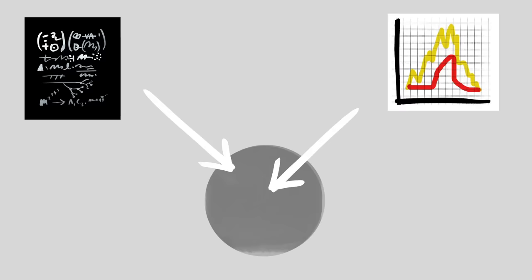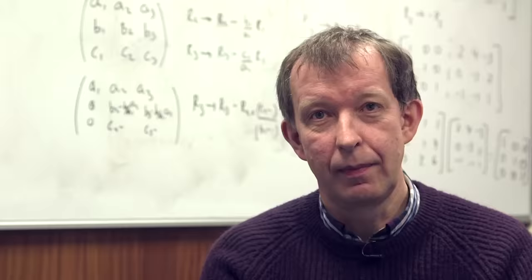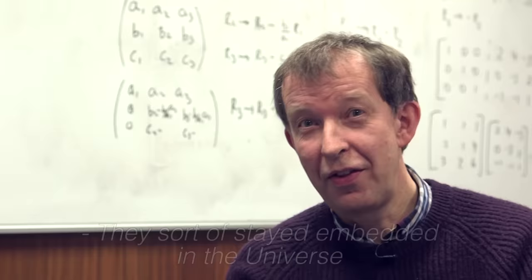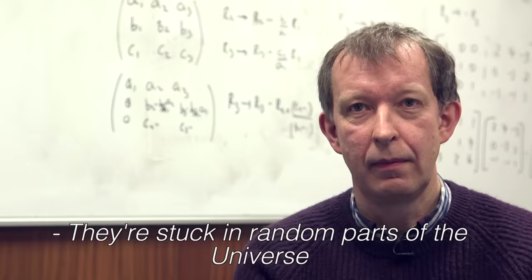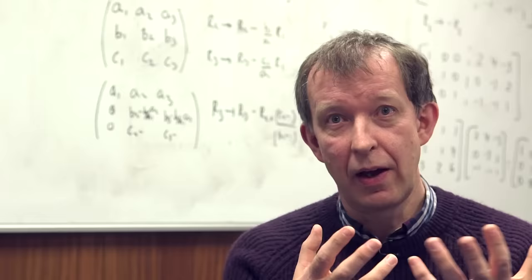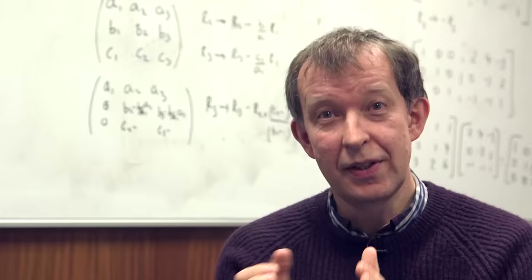When the primordial black holes formed, the ones that didn't evaporate, they sort of stayed embedded in the universe. They're all evaporating just slowly. The massive ones are evaporating slower than the lighter ones. But the ones that haven't evaporated yet, they just sort of stay embedded. They're just stuck in random parts of the universe. For example, those that have a mass bigger than 10 to the 15 grams, there's a range of masses for which these in principle could act as dark matter candidates.